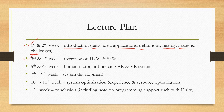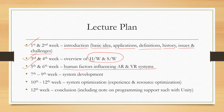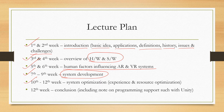In the third and fourth week, we are going to talk about the hardware and software used to build such systems. The fifth and sixth week will be devoted to a discussion on the human factors influencing AR and VR systems. From the seventh to ninth week, we are going to talk about in detail the system development aspects — how to build such systems, what stages to follow, and how to carry out those stages. The tenth to twelfth weeks will be devoted to a discussion on the optimization aspects.